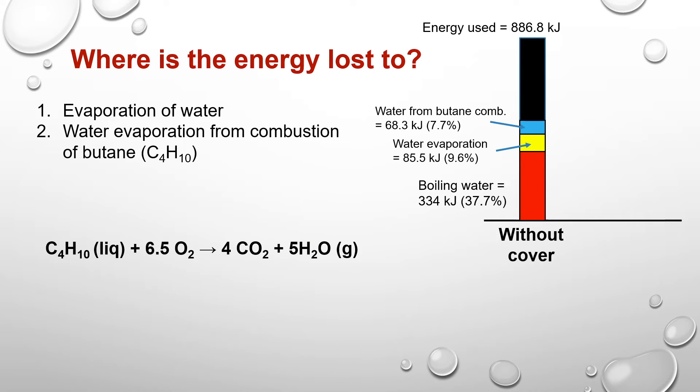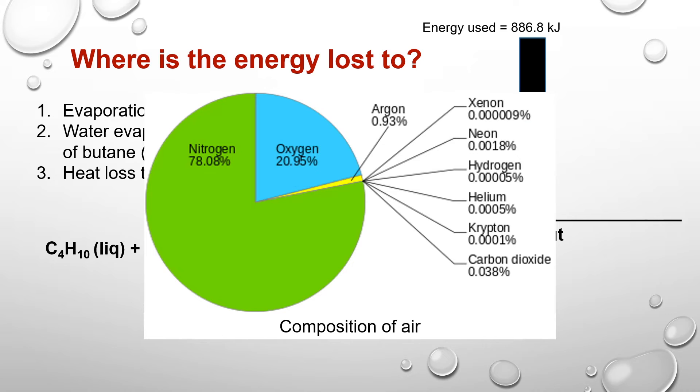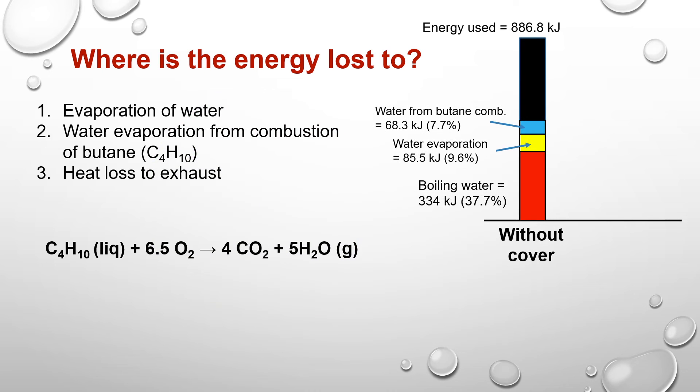A related energy loss is that of the exhaust. Air is actually not only composed of oxygen, but nitrogen and other gases as well. So for one mole of oxygen, there is approximately 3.76 moles of nitrogen. Therefore, the actual combustion reaction of butane in air has to be modified with the addition of 6.5 times 3.76 moles of nitrogen on both sides.